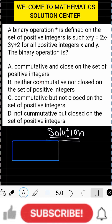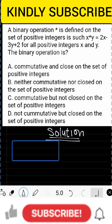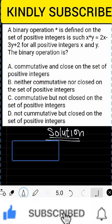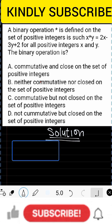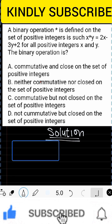A binary operation, asterisk, is defined on the set of positive integers such that x★y = 2x − 3y + 2, for all positive integers x and y. The binary operation is: (a) commutative and closed on the set of positive integers, (b) neither commutative nor closed, (c) commutative but not closed, or (d) not commutative but closed on the set of positive integers.